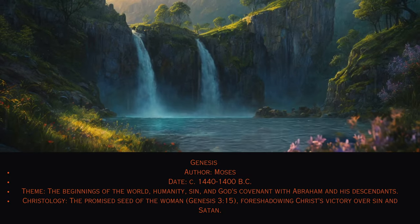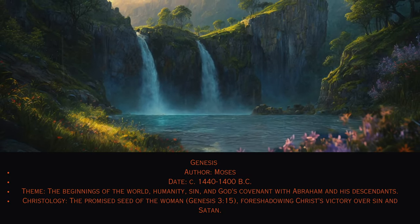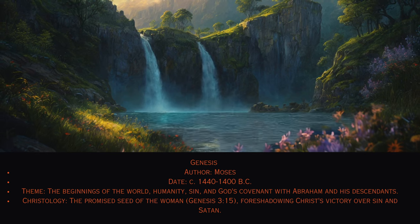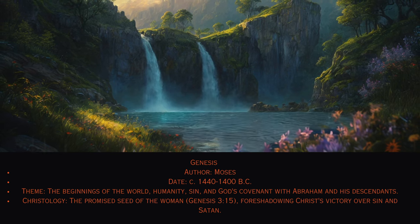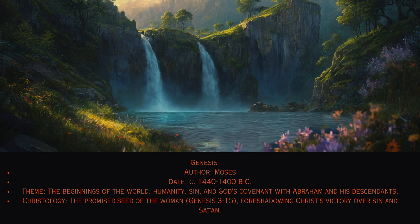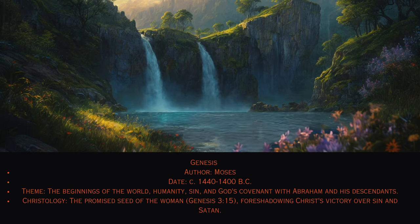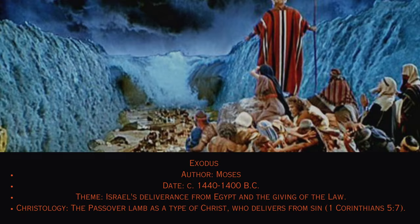Old Testament. 1. Genesis. Author: Moses, circa 1440–1400 B.C. Theme: The beginnings of the world, humanity, sin, and God's covenant with Abraham and his descendants. Christology: The promised seed of the woman (Genesis 3:15), foreshadowing Christ's victory over sin and Satan.